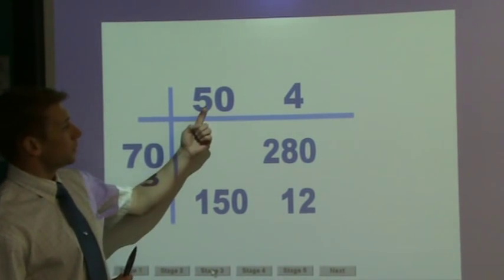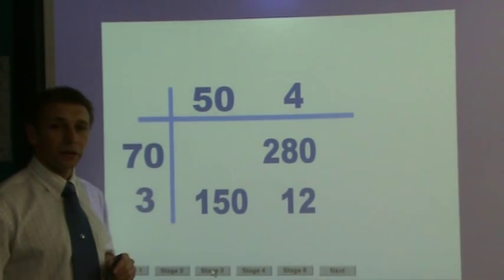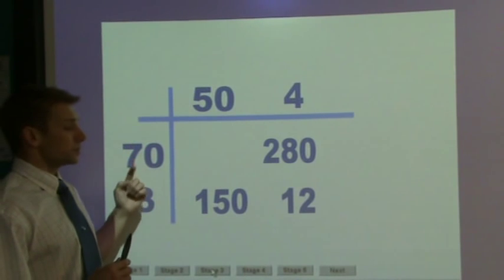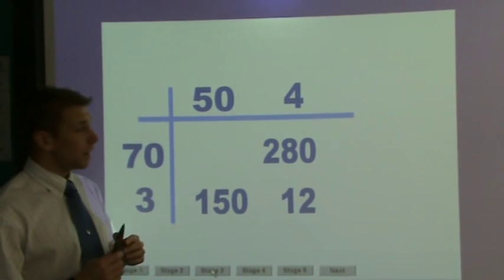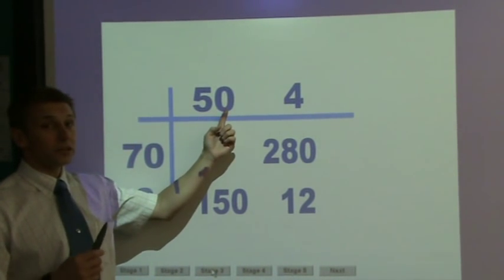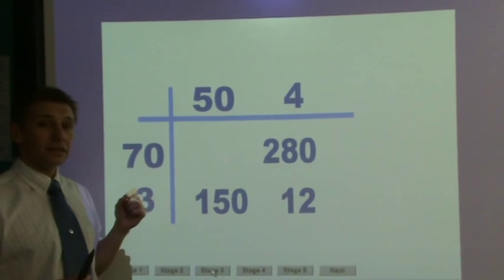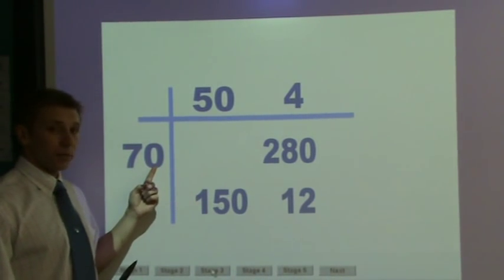The final step would be to take the 50 and the 70, multiplying those together. 5 times 7 would give us 35 indeed, but now I have to make it 10 times bigger because it is multiplied by 50, and 10 times bigger again because we are multiplying by 70.